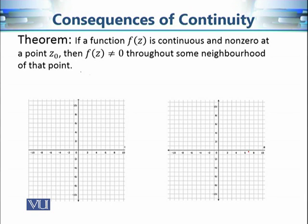Our first consequence of continuity is this result: if a function is continuous and non-zero at a point z₀, then the function is non-zero throughout some neighborhood of that point. Intuitively, if a function is continuous then certain properties change continuously — they will not change very rapidly. It is not a binary switch; some properties will change very continuously. So if a function is non-zero at z₀, it must be non-zero in some neighborhood of z₀.